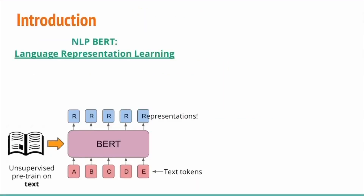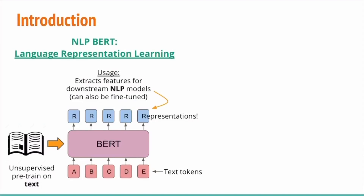BERT is a very well-performing language representation model which is unsupervised trained from a large amount of unlabeled text. When input with text tokens, the model outputs representations. When used with downstream NLP models, such as QA model, summarization model, through feature extraction or fine-tune, BERT achieved many state-of-the-art results.